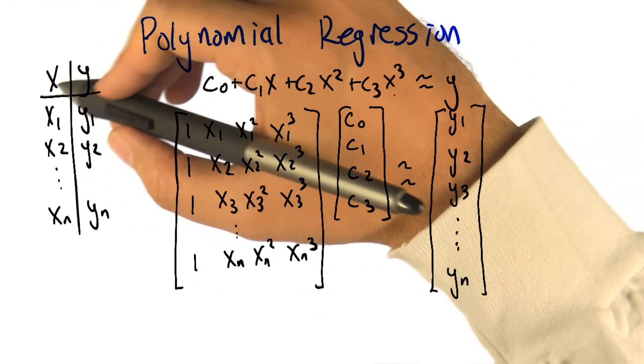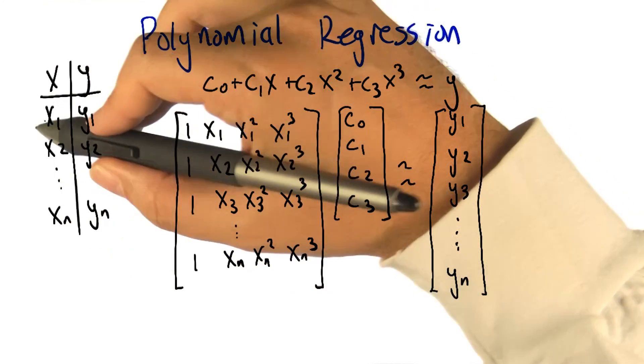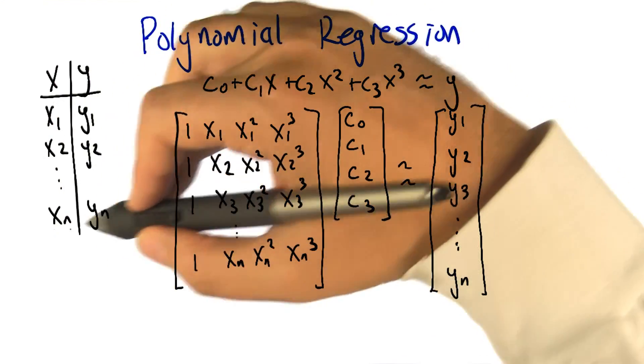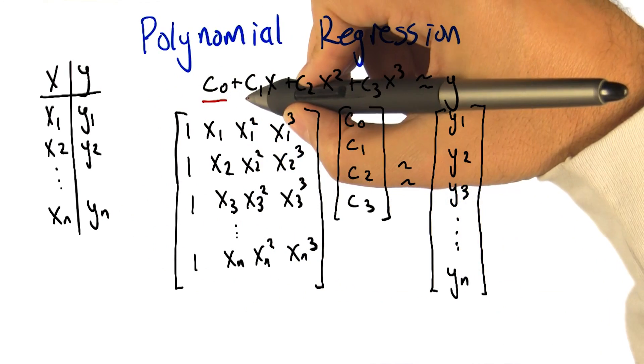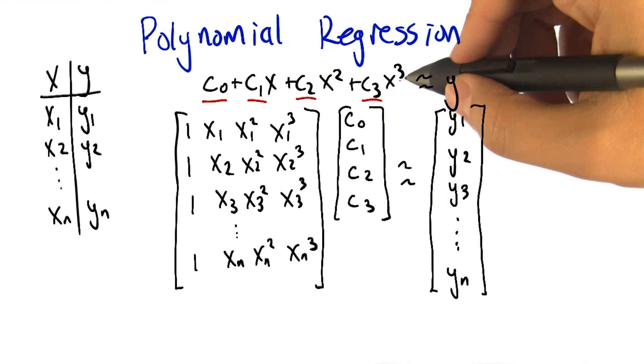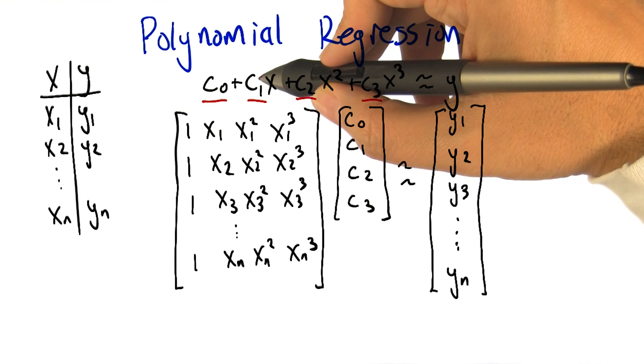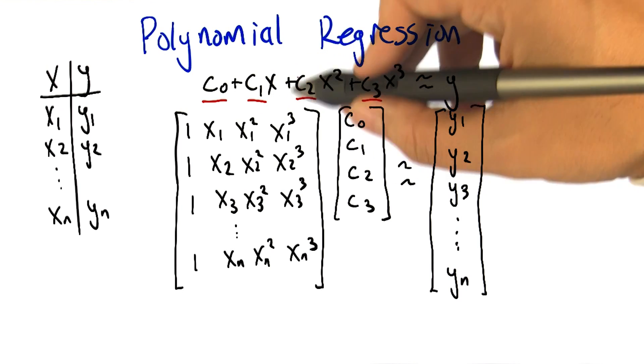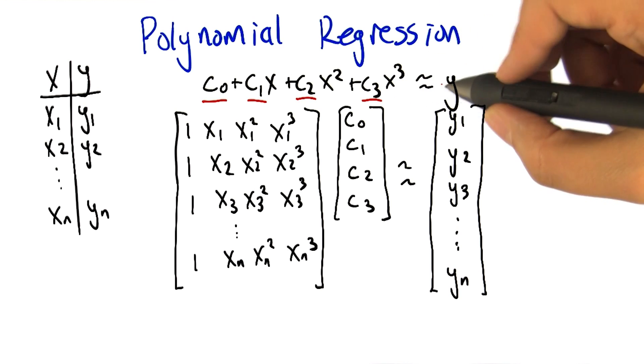So what we're really trying to do is we've got a set of data, x and y, n examples of x's and their corresponding y's. And what we're trying to find is these coefficients c0, c1, c2, c3. Let's say if we're trying to do cubic regression, where c0 gets added to c1 times x, which gets added to c2 times x squared, which gets added to c3 times x cubed. And we're trying to get that to look a lot like y.